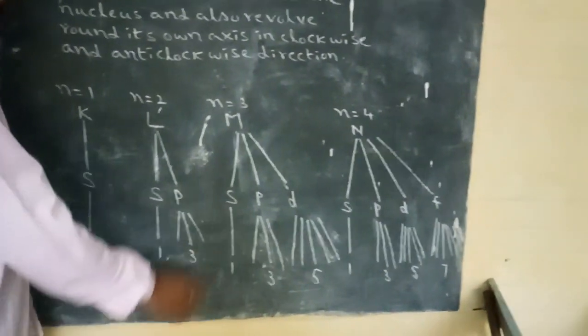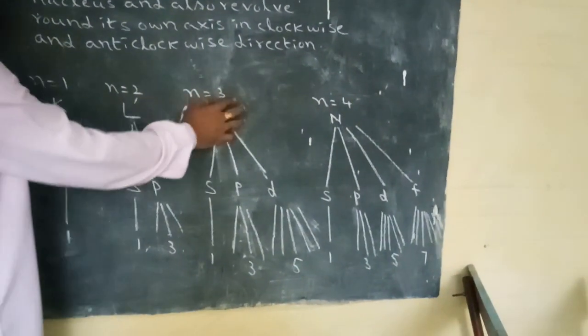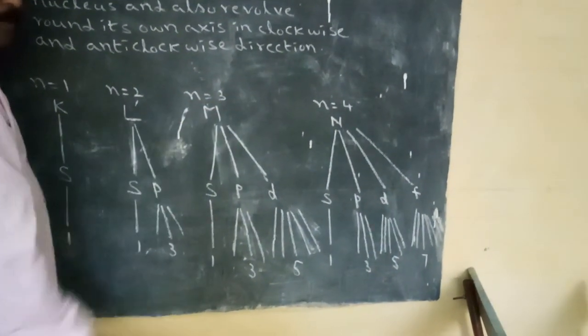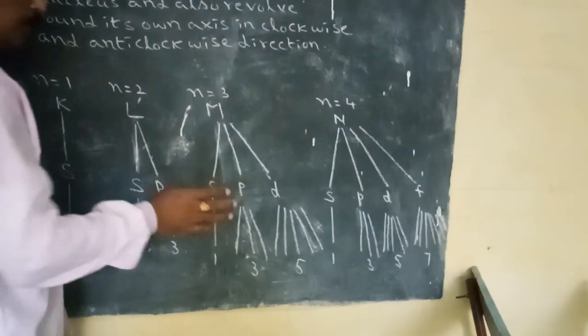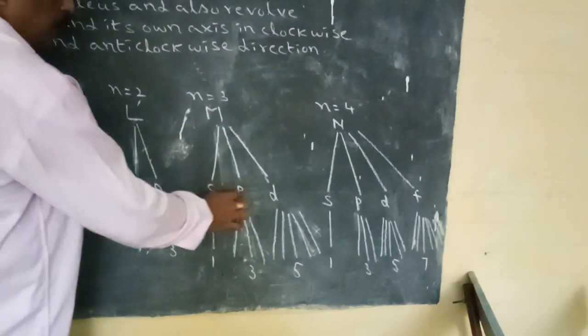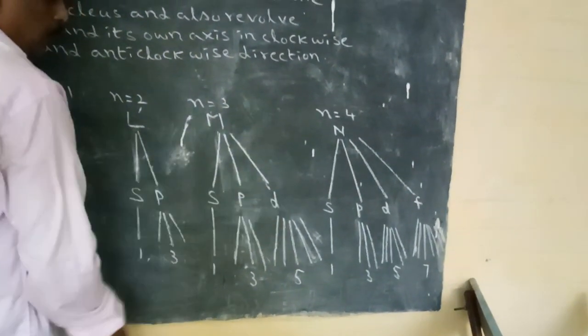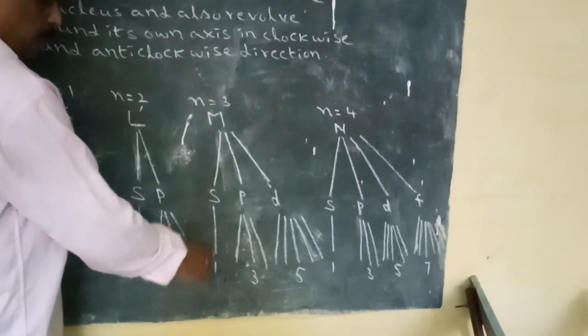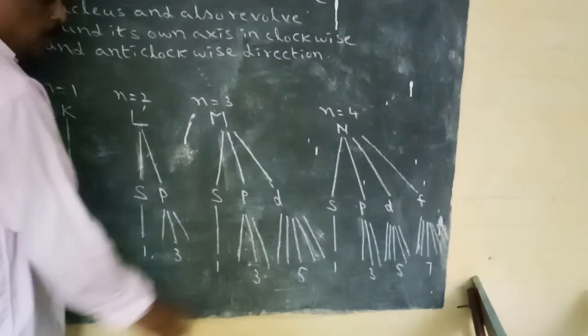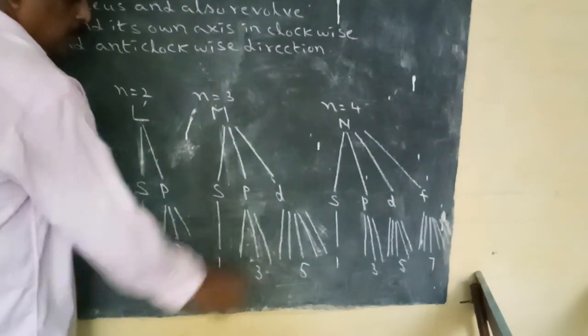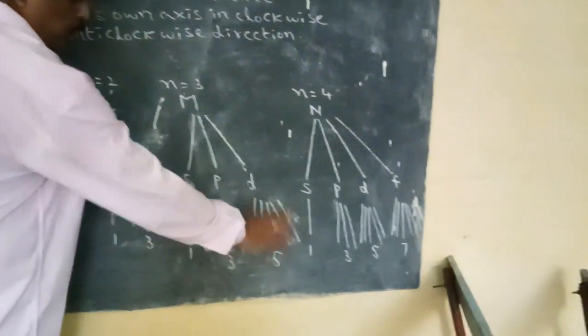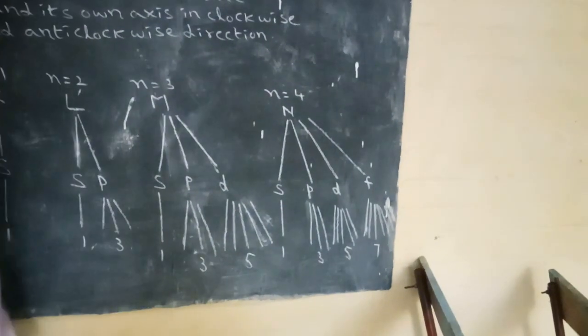N=3 is the M-Shell. M-Shell is divided into 3 atomic orbitals: S, P, and D. S is divided into 1 line, P is divided into 3 lines, and D is divided into 5 lines.